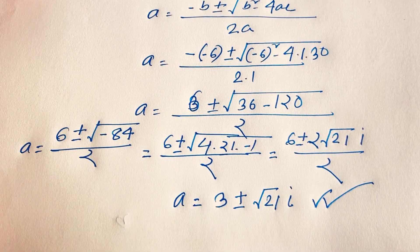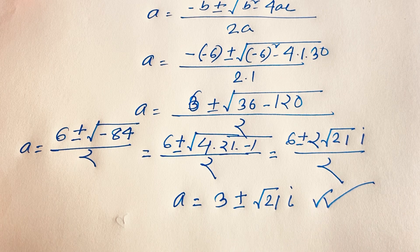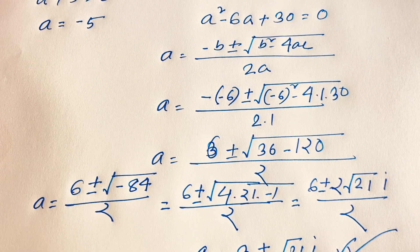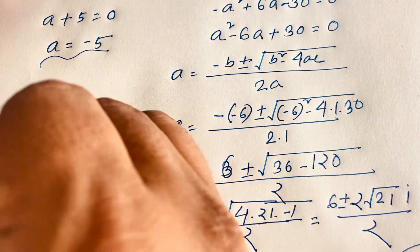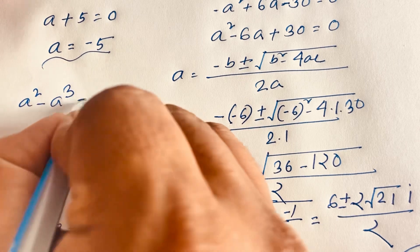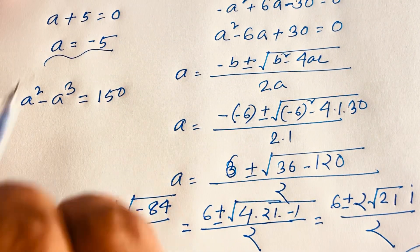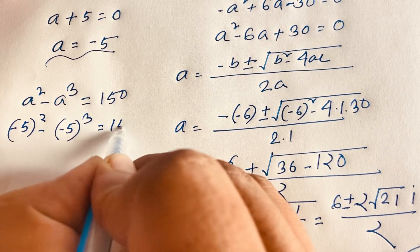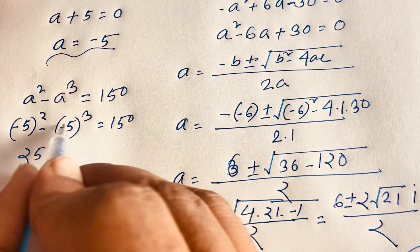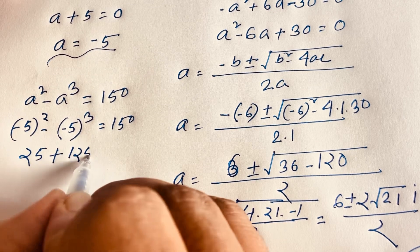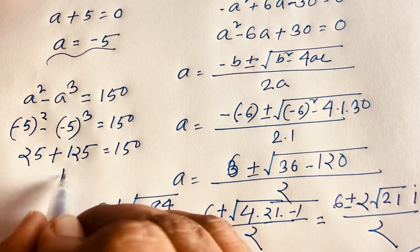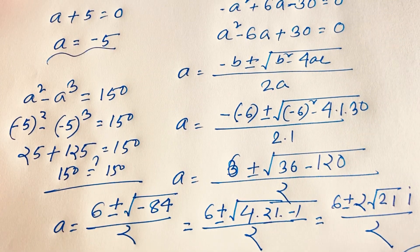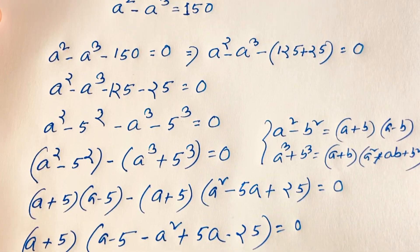So this is our other final answer — a complex solution with imaginary part — and our real solution is a equals negative 5. To verify: our question is a squared minus a cubed equals 150. With a equal to negative 5: negative 5 whole squared is 25, and negative 5 whole cubed is negative 125, but minus negative 125 gives positive 125. So 25 plus 125 equals 150, confirming 150 equals 150. Therefore a equals negative 5 is our correct answer. Thank you all — if you enjoyed this video, please subscribe to our channel for other interesting videos. Goodbye, take care.